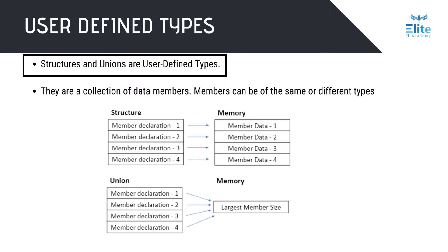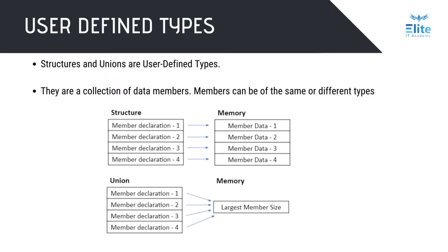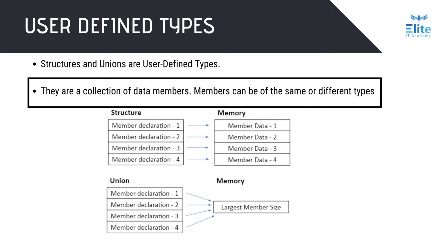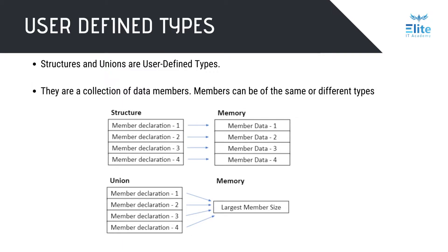Structures and unions are user-defined data types because you can create them in your program and they are not defined within the C language. Both structures and unions are collections of many members, and each of these members can be of different data types, like ints, long, arrays, etc. Like arrays, they occupy a contiguous area of memory, so that each member will be at a known offset from the starting address of the structure.